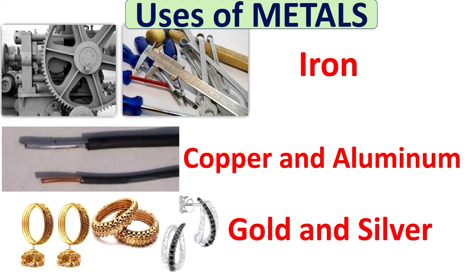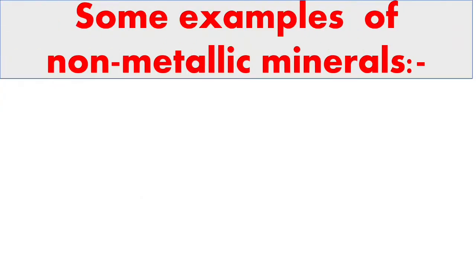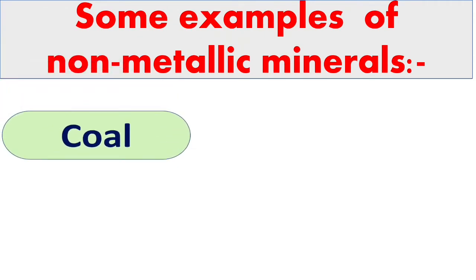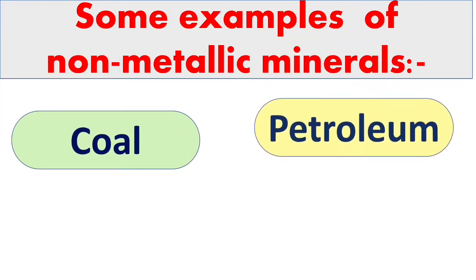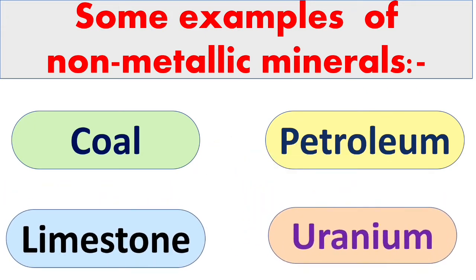Next is non-metallic minerals. The mineral resources which do not contain metals are called non-metallic minerals. Some examples are coal, petroleum, limestone, and uranium.